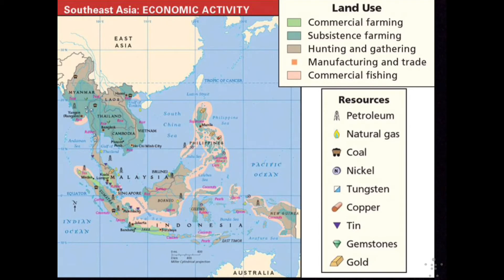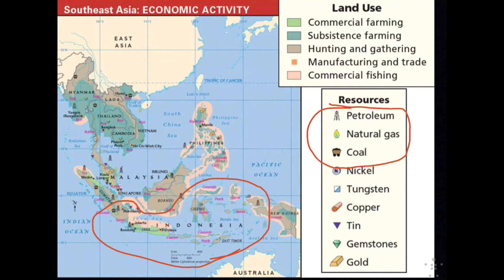Moving on to natural resources: the flora and fauna — plant and animal life — are more diverse here than anywhere else in the world, largely due to the vegetation. There is a plentiful supply of fossil fuels, including petroleum, natural gas, and coal visible on this map. Indonesia is one of the world's leading producers of oil and is one of the most important members of OPEC. There is also a plethora of minerals and gems — nickel, tungsten, copper, tin, gemstones, and even some gold dot this area.